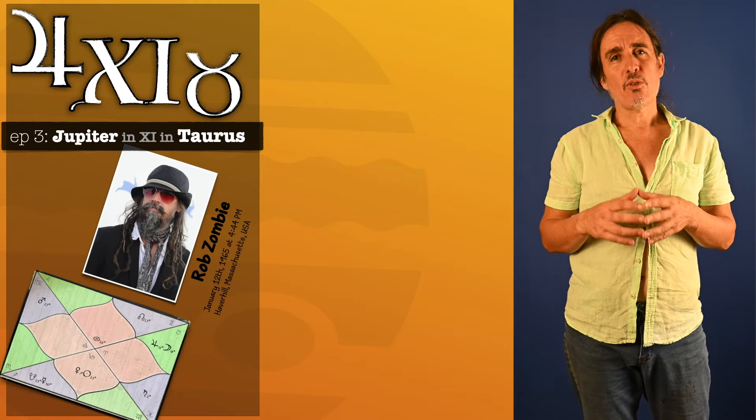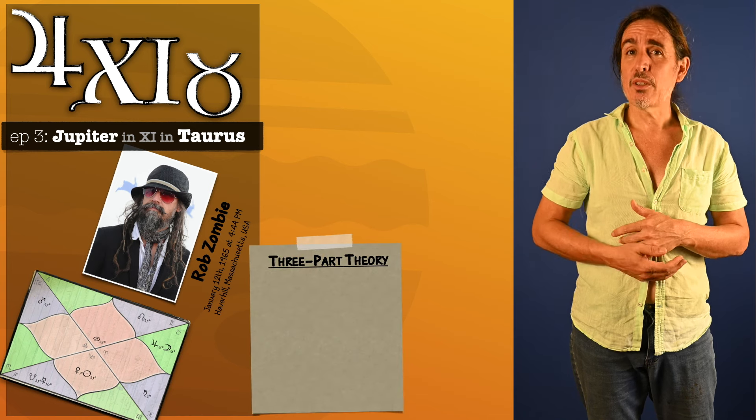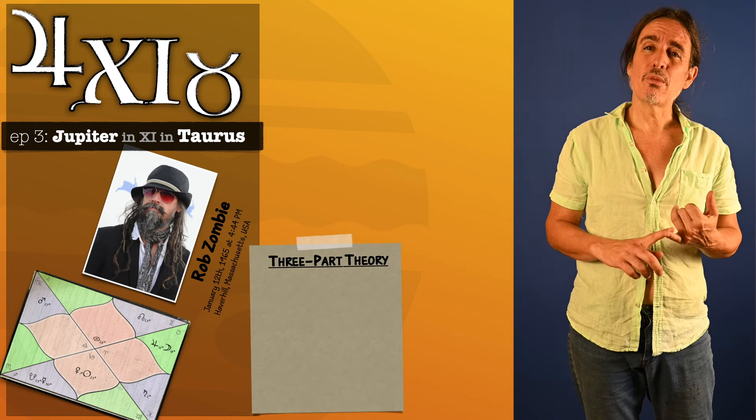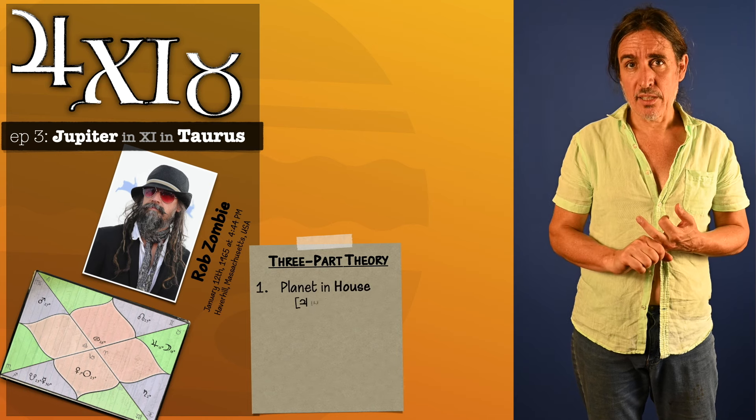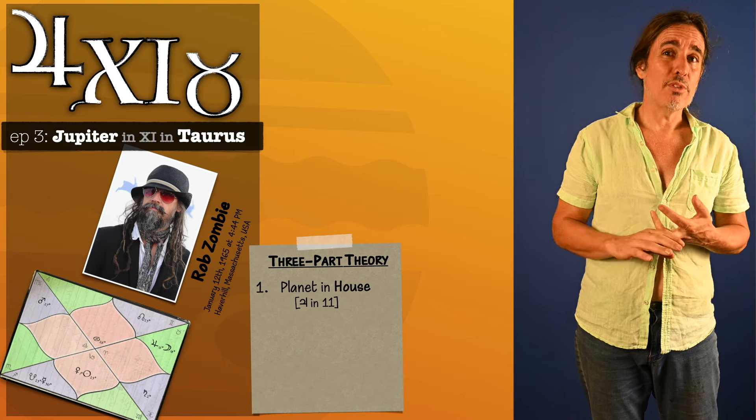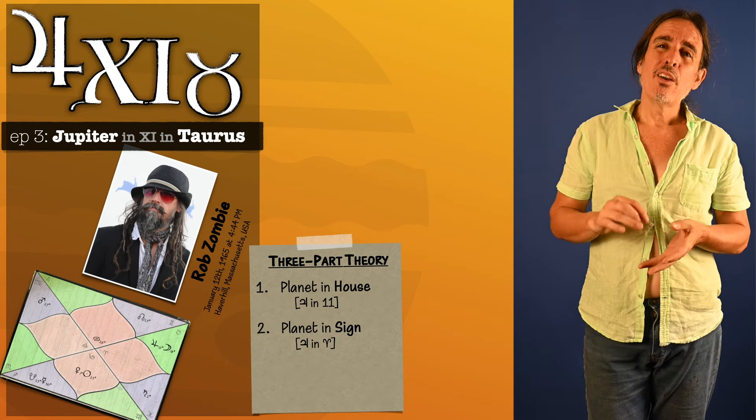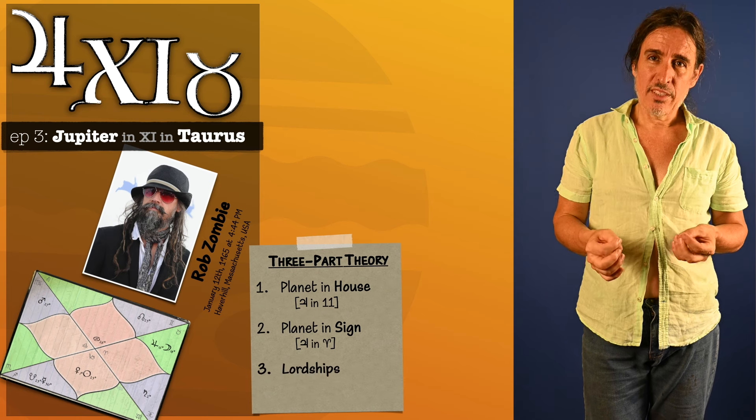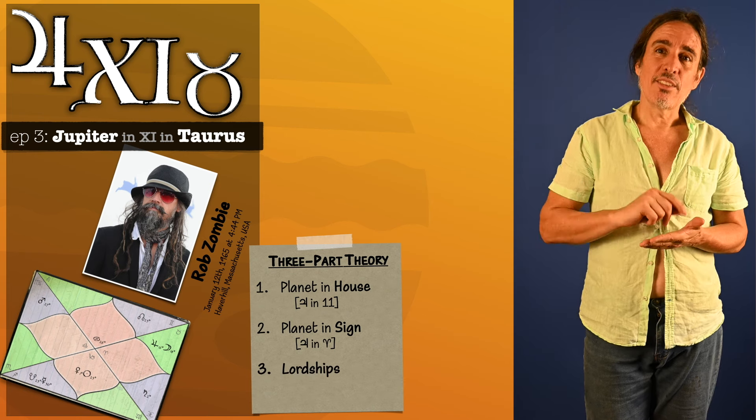To understand Jupiter in Taurus 11th house we use the same three-step process that we always use. First, we want to know what Jupiter in the 11th house itself symbolizes. Second, we want to know what Jupiter in Taurus itself symbolizes. And third, we want to know what are the lordships involved in putting Jupiter in Taurus in the 11th house and what do they symbolize.